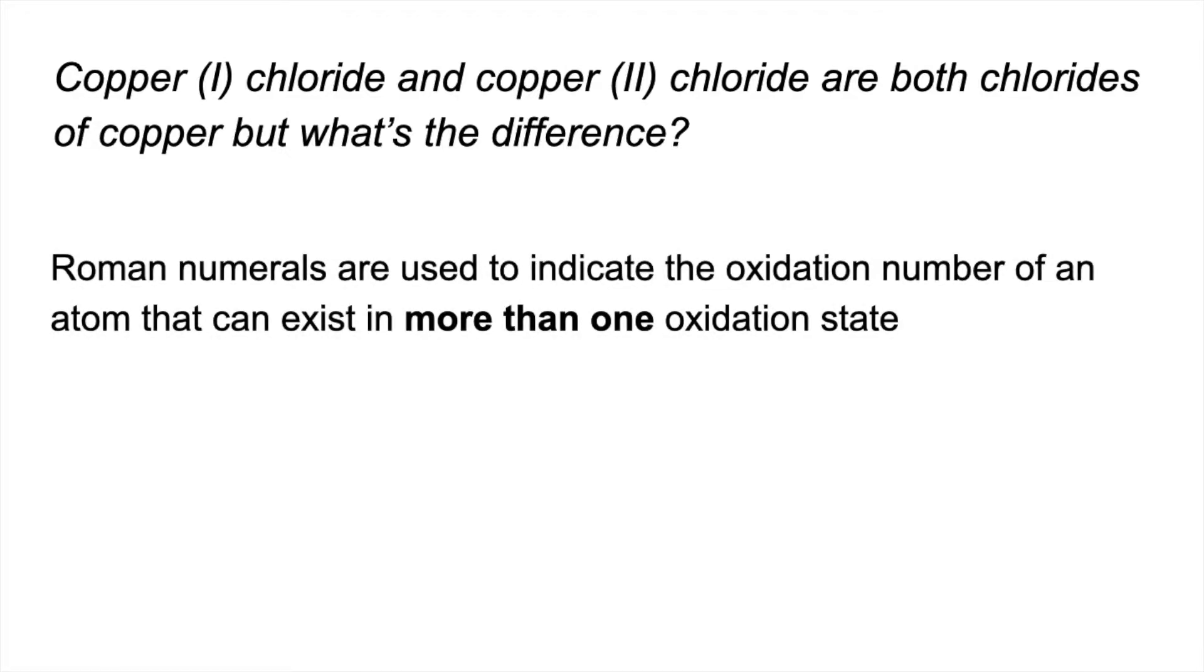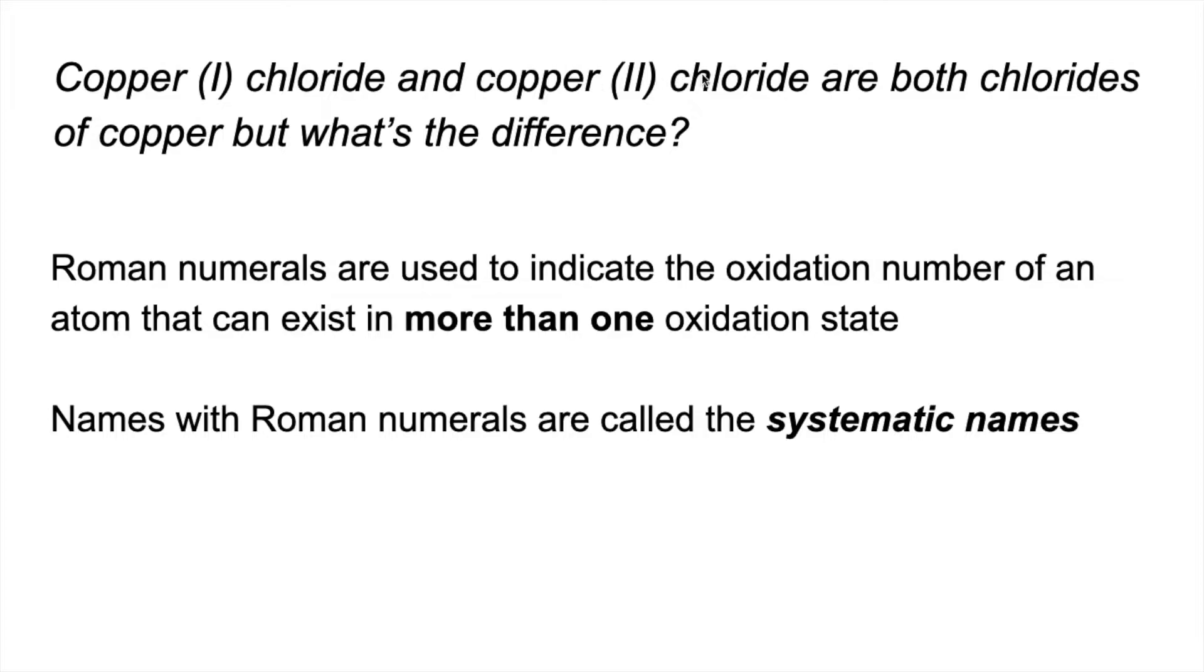These Roman numerals, this Roman I here and this Roman II, we use those to indicate the oxidation number of an atom that can exist in more than one oxidation state. So in this case copper can exist in more than one oxidation state, so we need the Roman numerals to indicate which oxidation state is present in the compound. And names that include these Roman numerals are called the systematic names.